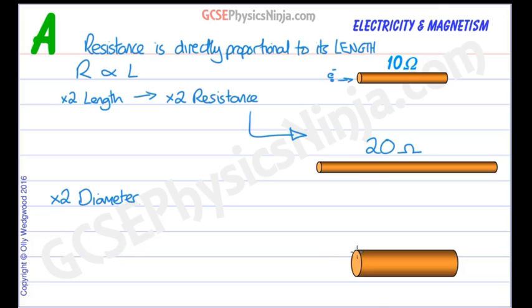So if you double the diameter then what happens to the area of cross section. Well we know that the area of cross section of a circle for this circular wire is pi times r squared where r is the radius. So if you times the diameter by 2 then you're actually multiplying the radius by 2 as well.